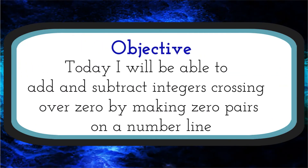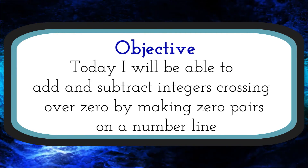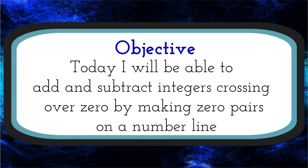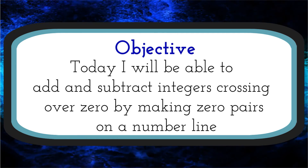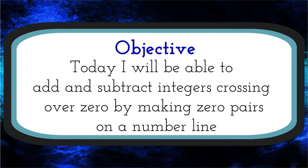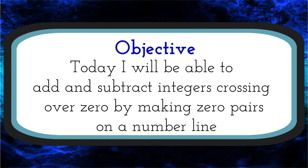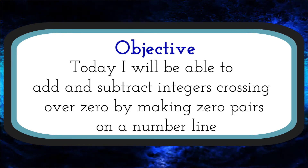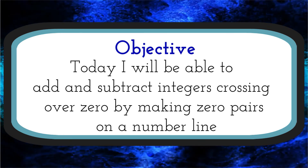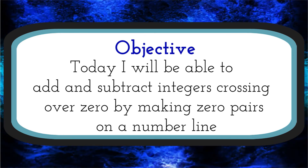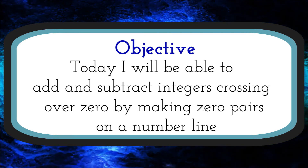Our objective today: I will be able to add and subtract integers crossing over zero by making zero pairs on a number line. So we're taking our last two lessons, putting them together, and then we're going to take the next step of crossing over zero.